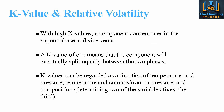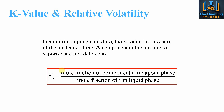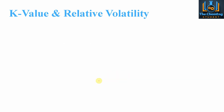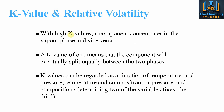A high K value of a component means that it will be in the vapor phase, because if we have a high mole fraction of that component in the vapor phase compared to the liquid, this overall value will be significantly higher. So, high values indicate the component resides in the vapor phase, whereas low values of K indicate the liquid phase.